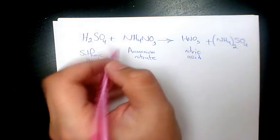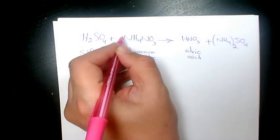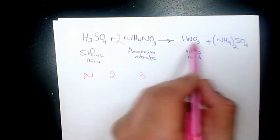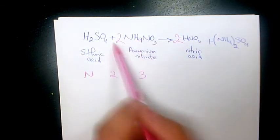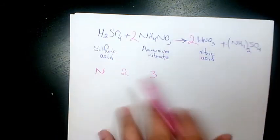So it means I need to have 2 here and that becomes 4, and here we need to have 2 as well. So now it's 4, 2 plus 2, so nitrogen is balanced.